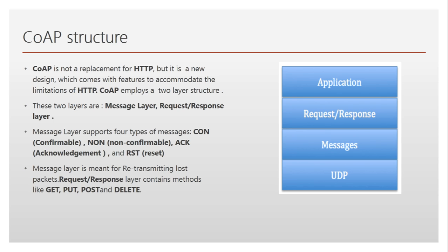The message layer deals with asynchronous interaction using CON, NON, ACK, and RST message types. The message layer supports: Confirmable (CON), Non-confirmable (NON), Acknowledgement (ACK), and Reset (RST). When reliability is required we use Confirmable. When reliability is not a big issue we use Non-confirmable. Messages are responded to with an Acknowledgement, and if something goes wrong a Reset is used.